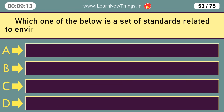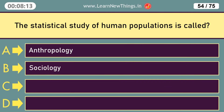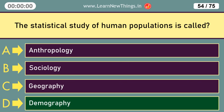Which one of the below is a set of standards related to environmental management systems in organizations? ISO 14000. The statistical study of human populations is called Demography.